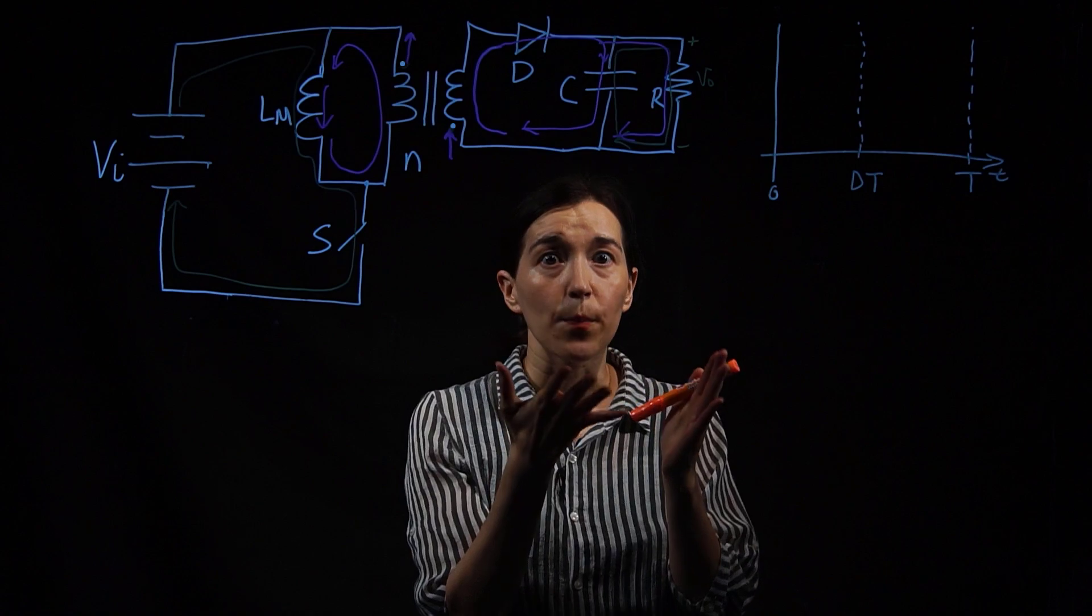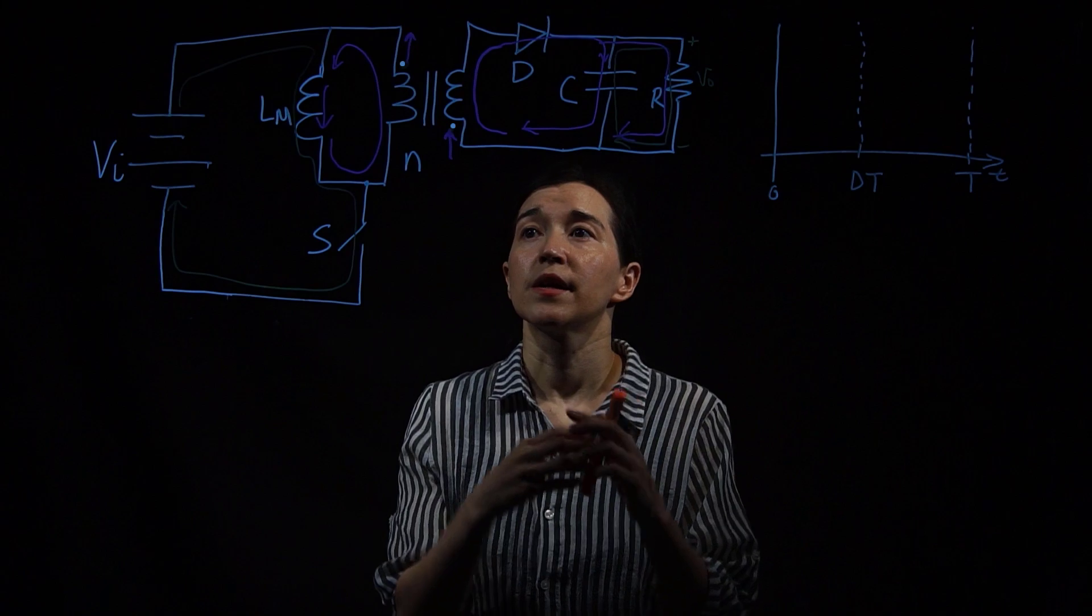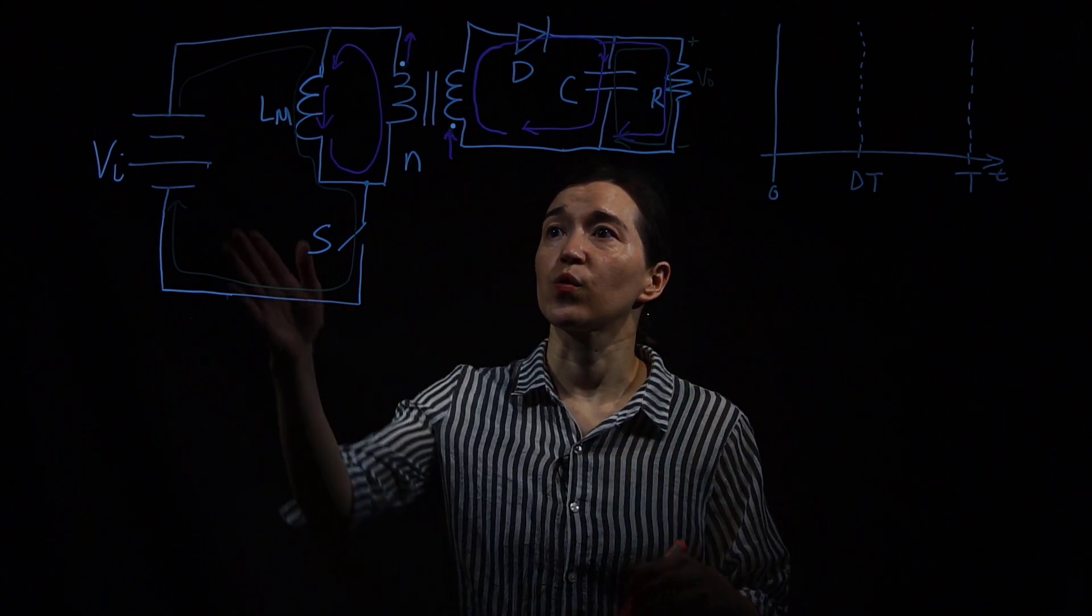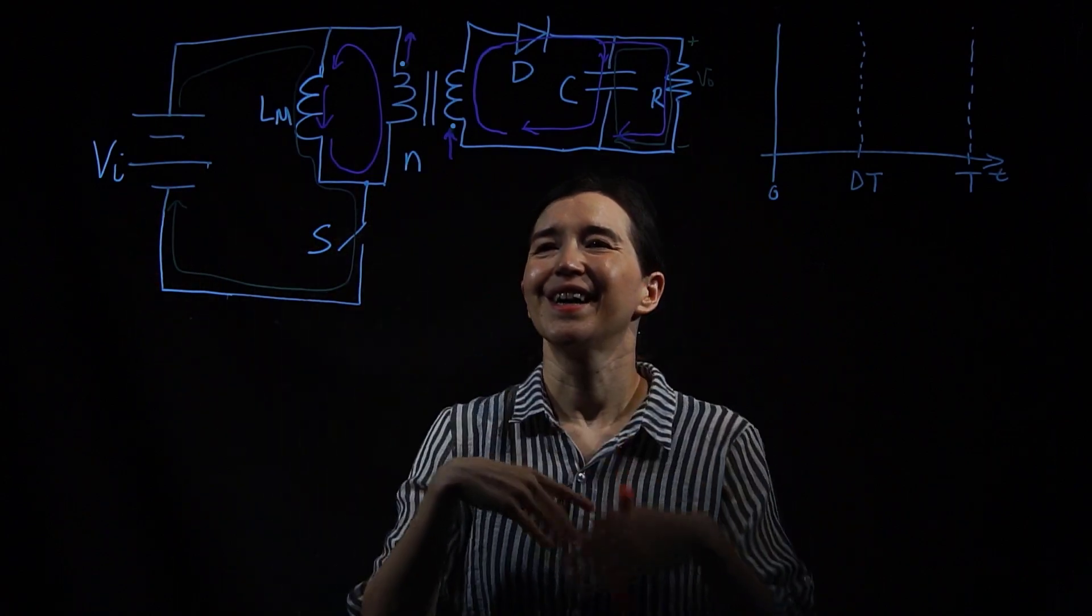We're looking at the output voltage and there's going to be some ripple across it because we're in two different switching modes. So let's look first at the mode when we have the active switch S here. Here's our flyback converter when it's on.